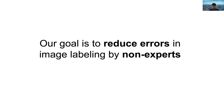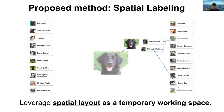In this study, our goal is to reduce error rate in image labeling by non-experts. We designed an image labeling interface we call Spatial Labeling. In this interface, we propose to leverage spatial layout as a temporary working space for screening annotation.